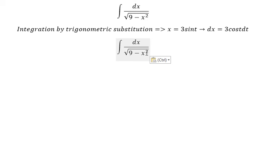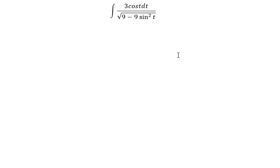So x to the power of 2 we change to 9 sine t squared, dx we change to 3 cosine t dt. The square root of number 9 we put outside, that's about number 3.